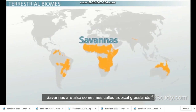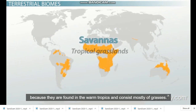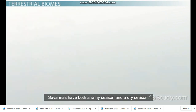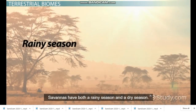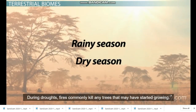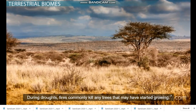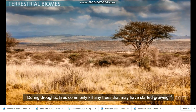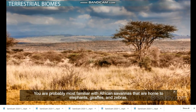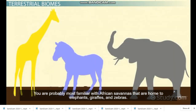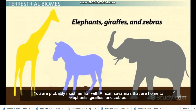Savannas are also sometimes called tropical grasslands because they are found in warm tropics and consist mostly of grasses. Savannas have both a rainy season and a dry season. During droughts, fires commonly kill any trees that may have started growing. You're probably most familiar with African savannas that are home to elephants, giraffes, and zebras.